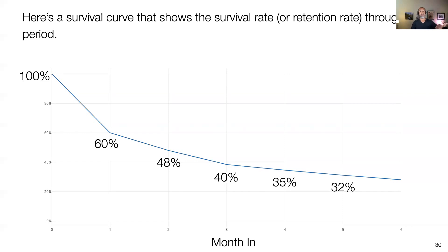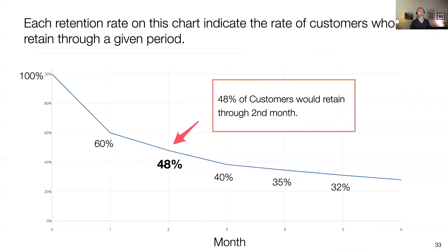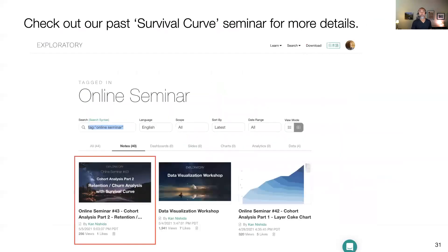The y-axis is survival rate or retention rate. For example, if we focus on the second month, it says 48%. That means the chance of customers retaining through the second month is 48%, or 48% of customers remain after the second month. So this survival curve gives you that idea — what's the survival rate or retention rate through that time period. For the details, I've done online seminar number 43, Cohort Analysis Part 2: Retention and Churn with Survival Curve seminar. You can find the seminar from our website under Learn, then go into Online Seminar.